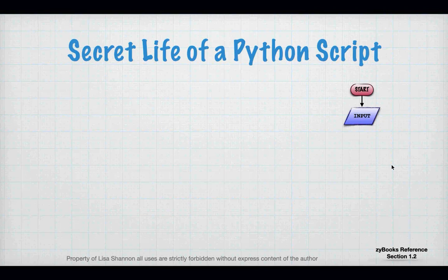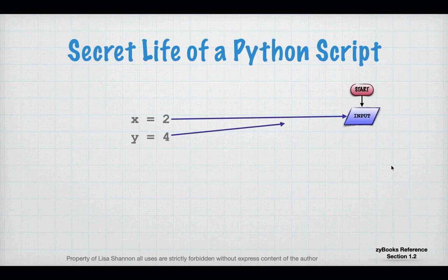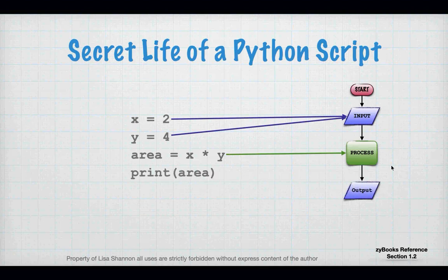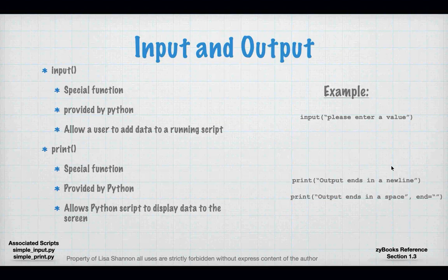So the secret life of a Python script. Every script you have to start. The first thing I'm always going to do is I'm going to input information — in some cases it might just be x equals 2 and y equals 4. Then I'm going to do something with that information, that's called processing — I'm going to have area equals x times y, that is an expression. And then I'm going to output it someplace, and then the program is going to end. And that's what we just saw.